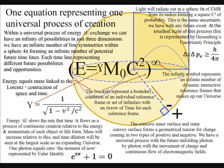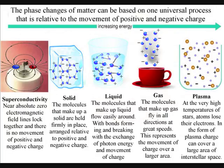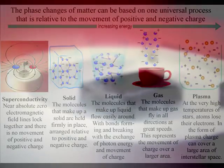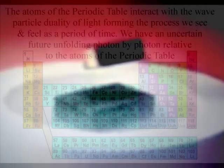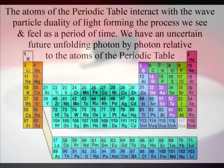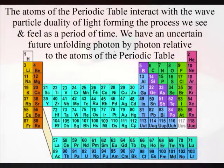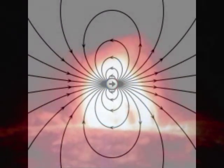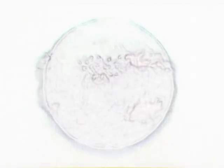In my other videos I explain how this can be a universal process of energy exchange that is relative to the different structures that atoms form, with different phase changes in matter changing how the process unfolds at different temperatures. We can see this at very low temperature with superconductivity, with magnetic field lines locking together and gravity disappearing in the reference frame of the experiment — we have a phase change. At the temperature of everyday life the process is relative to the atoms of the periodic table. At high temperatures we have another phase change, with the process unfolding on much larger scales in the form of plasma, with charge being able to cover a large area of interstellar space or even a whole star.